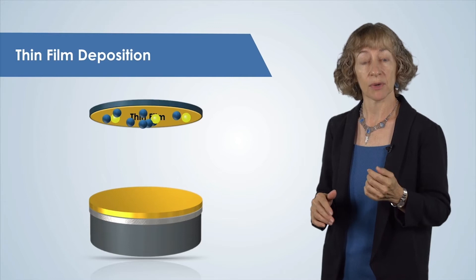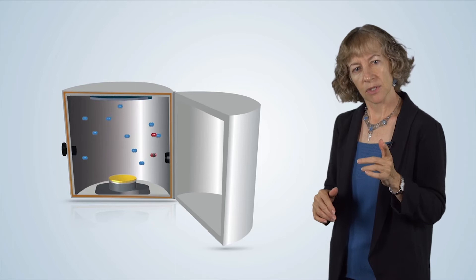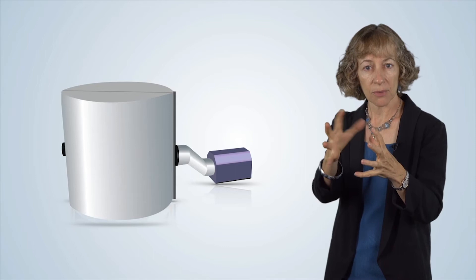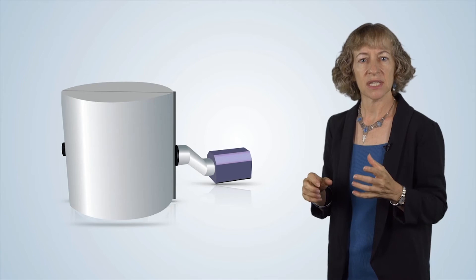Vacuum systems are typically a chamber or vessel that can be sealed off from the outside environment. After the chamber is sealed, the air molecules contained within the chamber are removed with one or more vacuum pumps. We'll discuss the details of vacuum pumps in several dedicated videos. There are many different types of vacuum pumps, but all pumps serve one basic purpose: to remove air from a vacuum chamber.